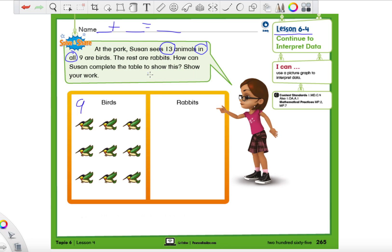How can Susan complete the table to show this? Now, if I were to ask you, how many rabbits do we need? How would you solve that? Do you have an idea about how you would like to solve it? If you're not sure, let me give you a little hint. So we know that there's 13 in all. So I'm going to write the number. Let me make a little space here.